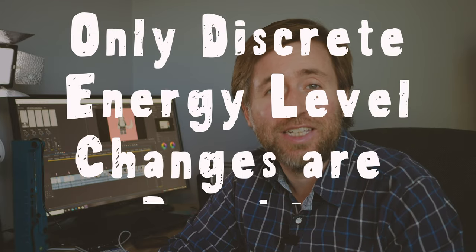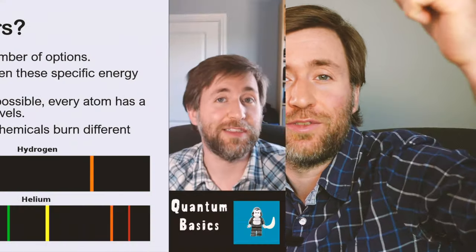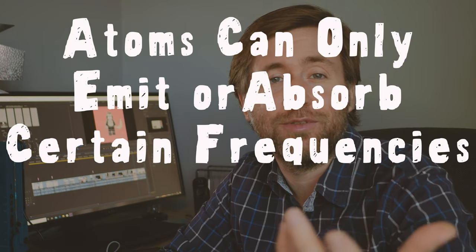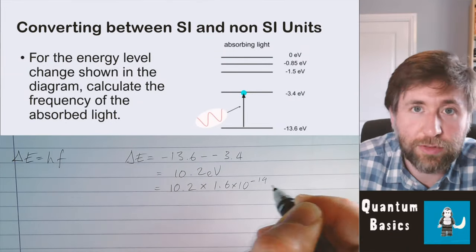The biggest idea in quantum is that in atoms, there are only fixed, discrete energy level changes that are possible. When atoms absorb photons, they move up the energy levels — but only those fixed, discrete changes — so they can only absorb certain energies of photon, certain frequencies of light. When those electrons fall down the energy levels, they can only emit certain photons. Those photon energies are the same whether being absorbed or emitted, so they absorb the same frequencies as they emit.